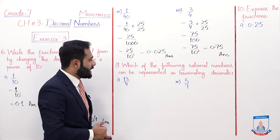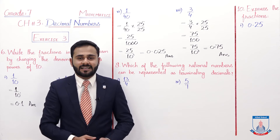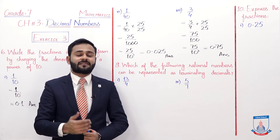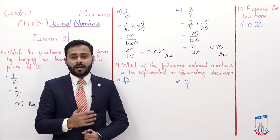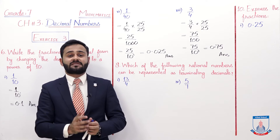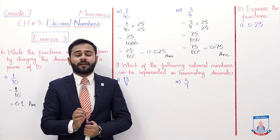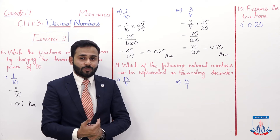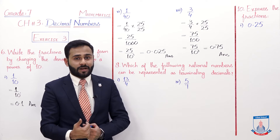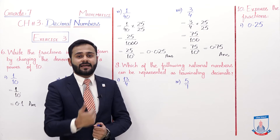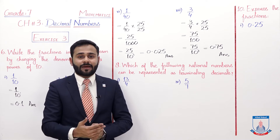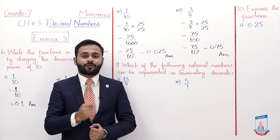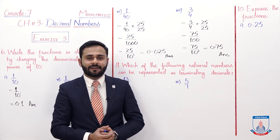Question number 8: which of the following rational numbers can be represented as terminating decimals? Isko humne divide karke decimal form mein convert karenge. Jo decimal ek finite number par aakar stop ho jaata hai use hum kehte hain terminating decimal, aur jo decimal continue rehta hai stop nahi hota use kehte hain non-terminating decimal.